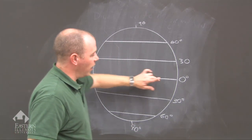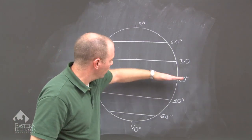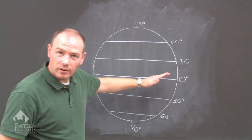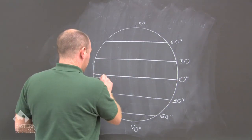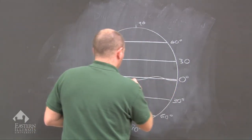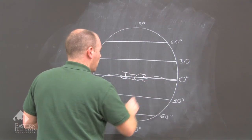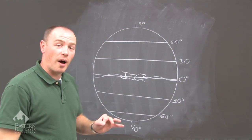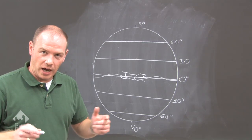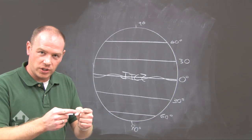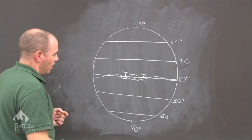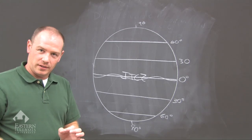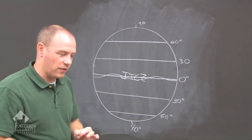Hovering around the equator, just kind of floating and then migrating and meandering around the equator, is the ITCZ — the Intertropical Convergence Zone. Convergence means coming together. This is influenced by, and is the result of, the direct ray of the Sun.